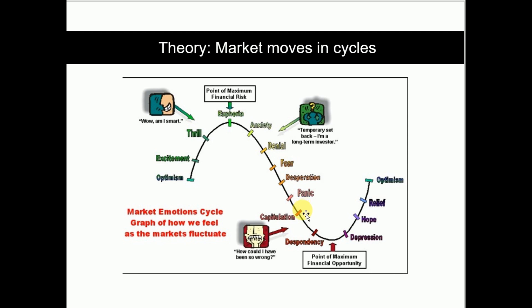Then comes capitulation — 'How could I have been so wrong?' — and you're down 20 to 30 percent. Despondency follows, and everyone says the stock market doesn't work and they've lost all their money. This is the point of maximum financial opportunity. Then there's still depression, a dead cat bounce, then hope, relief, and optimism again as the market recovers. This is just a cycle.